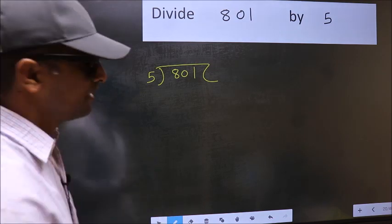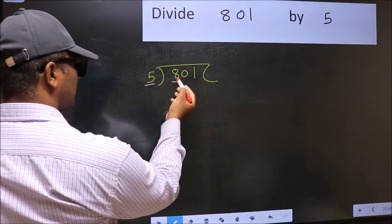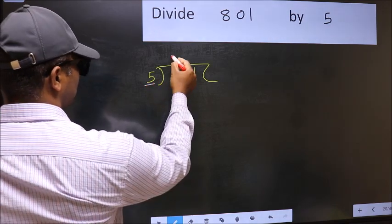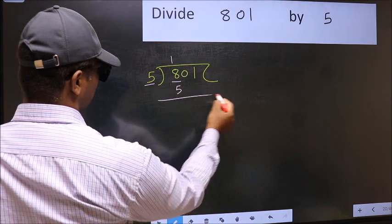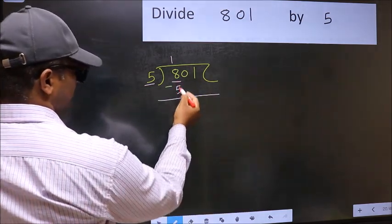Next. Here we have 8 and here 5. A number close to 8 in 5 table is 5 once 5. Now you should subtract. 8 minus 5, 3.